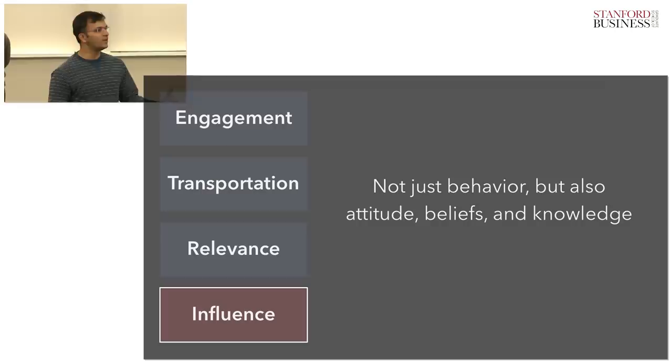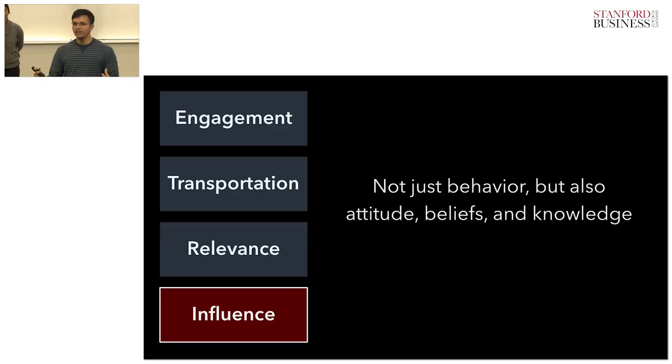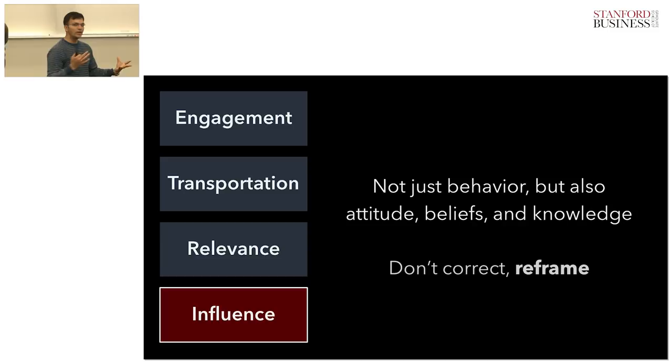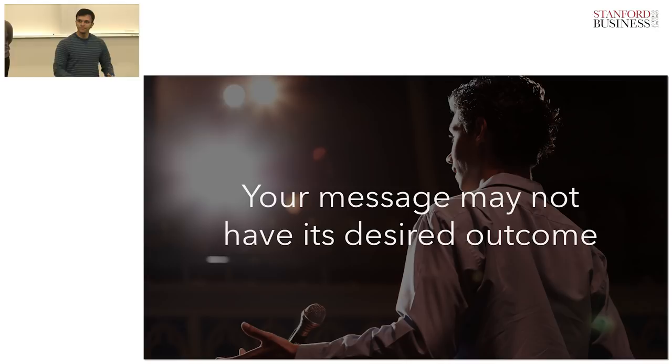The fourth concept is influence — this is the whole purpose of your message. You want to influence your audience's behavior, make them do certain things in the way you want them to. But behavior is only a manifestation. We also want to address their attitudes, beliefs, and knowledge — we want to alter that. We want to create a parallel stream of their beliefs, so they feel that what you are saying makes sense. Do not try to say their view is wrong and yours is right. Instead, define a new parallel stream.